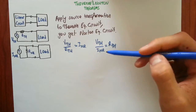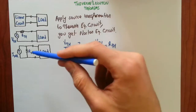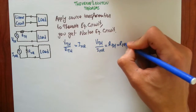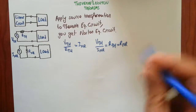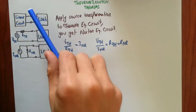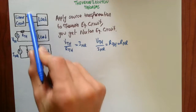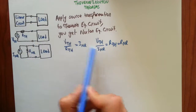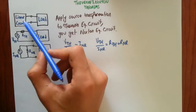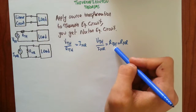Notice that in Norton's theorem, R_Thevenin and R_Norton are equal to each other. So if you find the open circuit voltage between terminals A and B, you can find the equivalent resistance between A and B terminals. And that's a very handy tool.